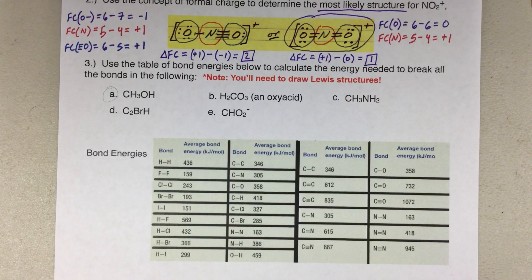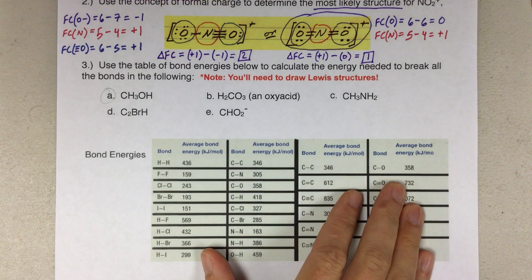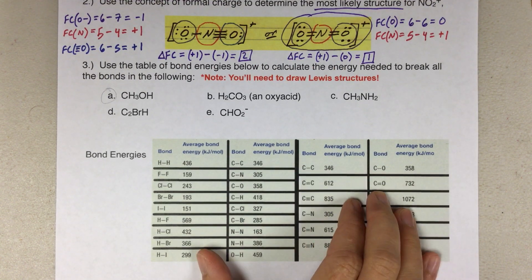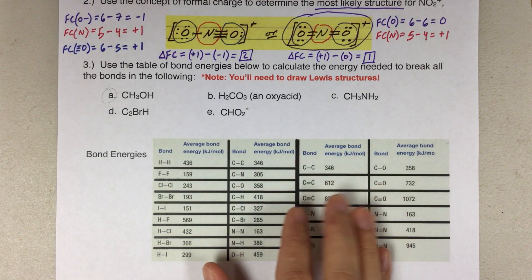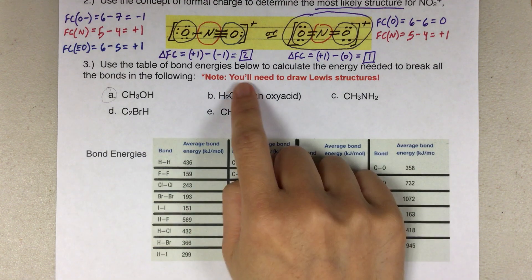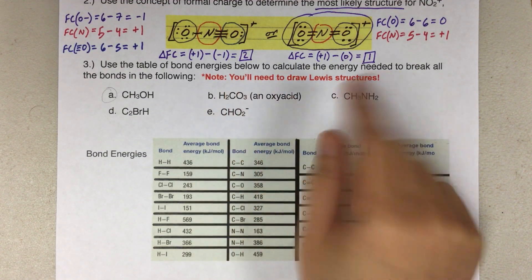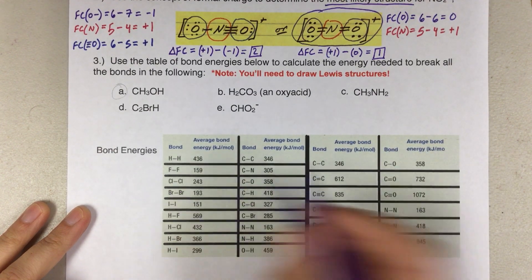The last type of problem is bond energy problems. If you have a bond energy problem, you need to be given a bond energy table — you will not be required to memorize bond energy values, so you'll always be given the table as a tool. Keep in mind you have to draw Lewis structures to do these problems, because you need to know what types of bonds are involved. I'm going to do 3A as the example. To draw the Lewis structure, we need to add up all the valence electrons.